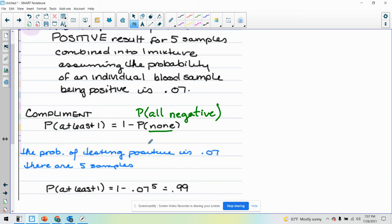So the probability of testing positive is 0.07, so the probability of testing negative is the complement at 0.93.